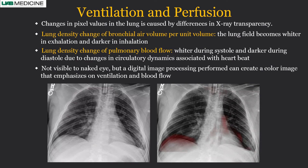Changes in the pixel value of the lung are caused by differences in X-ray transparency. Lung density changes when a patient is breathing in and out: when you breathe in, there is less attenuation of X-rays so the lungs appear black; when you breathe out, there is more density and they become lighter. Similarly, during the cardiac cycle, in systole there is more blood pumped to the lungs, so lung images are slightly whiter compared to diastole. However, these changes are not visible to the naked eye, so you cannot really determine what's going on.